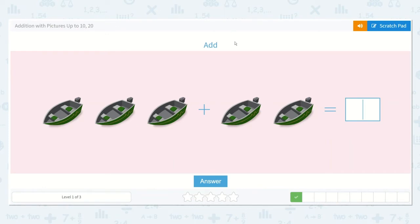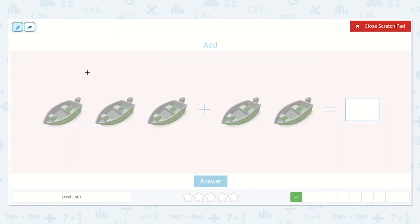Next we have boats. Let's count those. I see we have 1, 2, 3, plus 1, 2. So 3 plus 2 is equal to a number. Let's count them all. 1, 2, 3, 4, 5. So 3 plus 2 is equal to 5. 3 boats plus 2 boats is 5 boats.